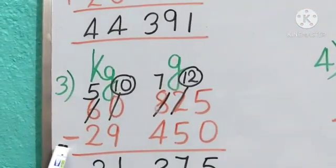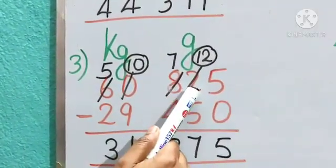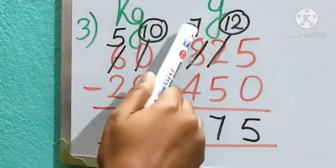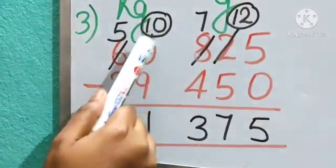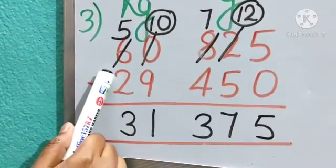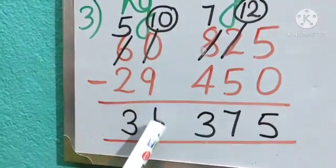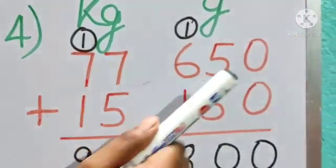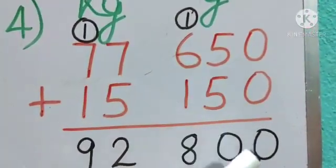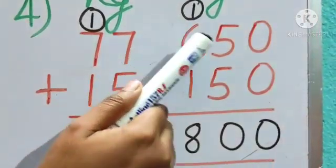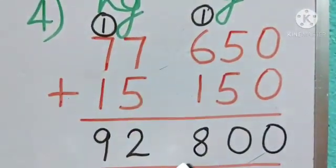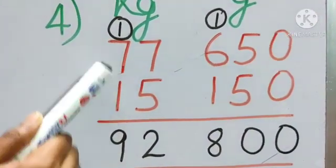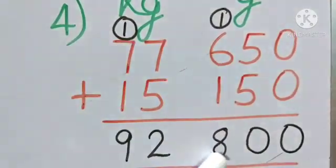Number 3, again here subtraction. So 5 minus 0, 5. 2 we can't do, so I have borrowed 1 from here. 12 minus 5, 7. And 7 minus 4, 3. Again here, 0 minus 9 we can't do. We have borrowed 1 from 6. So this one became 10 minus 9, 1. And 5 minus 2, 3. Last, number 4, addition is given. 0 plus 0 is 0. 5 plus 5 is 10. 0, carry 1 here. 6 plus 1 is 7, carry 1 is 8. 7 plus 5 is 12. 2, carry 1. 7 plus 1 is 8, and carry 1 is 9. 92 kg and 800 gram.